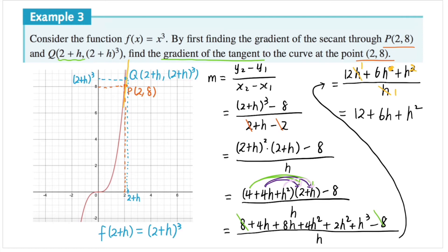So this expression, 12 + 6h + h², is essentially the gradient of the secant through P and Q. As h gets closer and closer to zero, the two points P and Q get closer and closer together — and the closer they are, the more accurate the estimation of the tangent gradient. So as h goes to zero, 6h goes to zero and h² goes to zero, and we're left with 12 only. Therefore the gradient of the tangent to the curve at point P is 12.